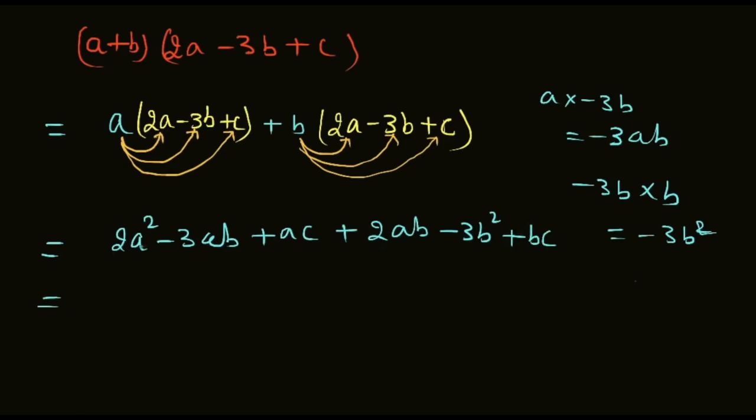Now students, let's combine the like terms. We have 2a squared minus 3ab and plus 2ab plus ac and minus 3b squared plus bc.